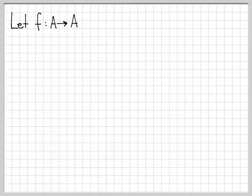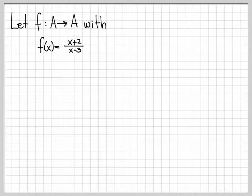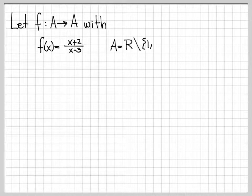In this problem, we're going to work with the function f, which is a function from A to A, and we're going to use the definitions of one-to-one and onto to show that it is a one-to-one and onto function. The specific function we're going to work with is f(x) = (x + 2)/(x - 3), and the set A is the set of all the reals except for the points one and three.